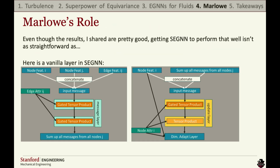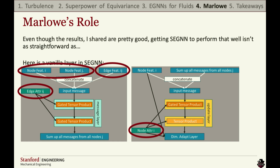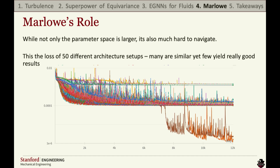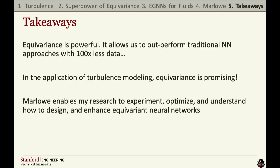Getting SEGNET to work this well isn't straightforward — this is just a vanilla layer of it. There are four input parameters: node and edge features, as well as node and edge attributes, which exponentially increases the hyperparameter space. We also have learnable weights at five instances per every layer, making the loss landscape really hard to navigate. With 50 different architecture setups, many are similar but very few actually yield really good performance. In the loss plot over epoch, some have an error of 10 to the negative sixth while most are at 10 to the negative third. Marlowe really allows me to experiment, optimize, and enhance equivariant neural networks, because they're really sensitive.